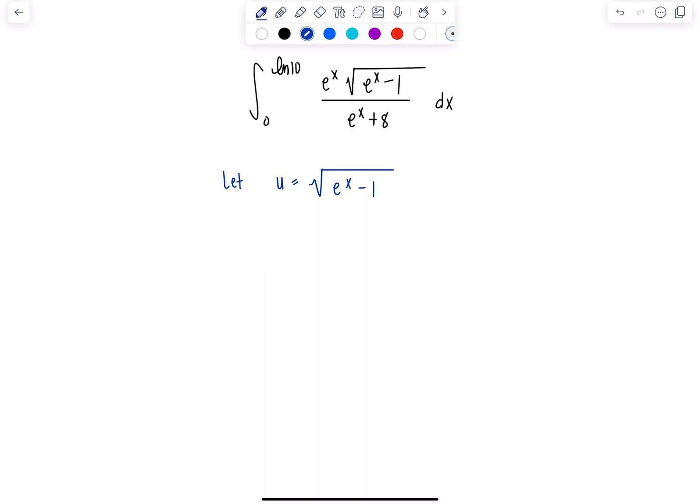To find du, I don't want to do the nasty chain rule, so let's just square both sides first. So u squared equals e to the x minus 1. Then now let's differentiate both sides. So we have 2u du equals e to the x dx.